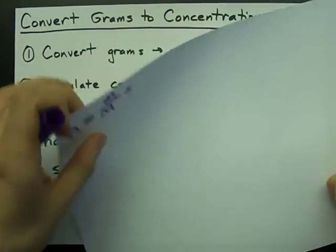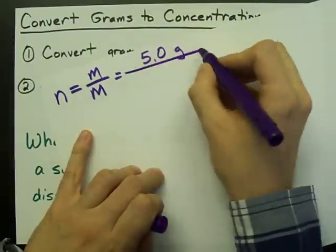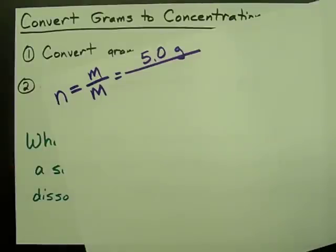How many grams did I have again? 5 grams. 5.0 grams. What's the molar mass of sodium chloride?